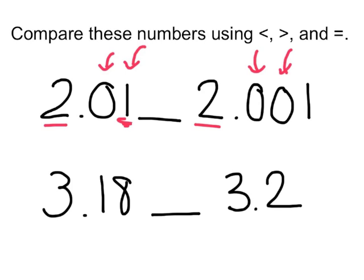One out of hundred is bigger than one out of a thousand. So we need to eat the larger number. Two and one hundredth is greater than two and one thousandth.